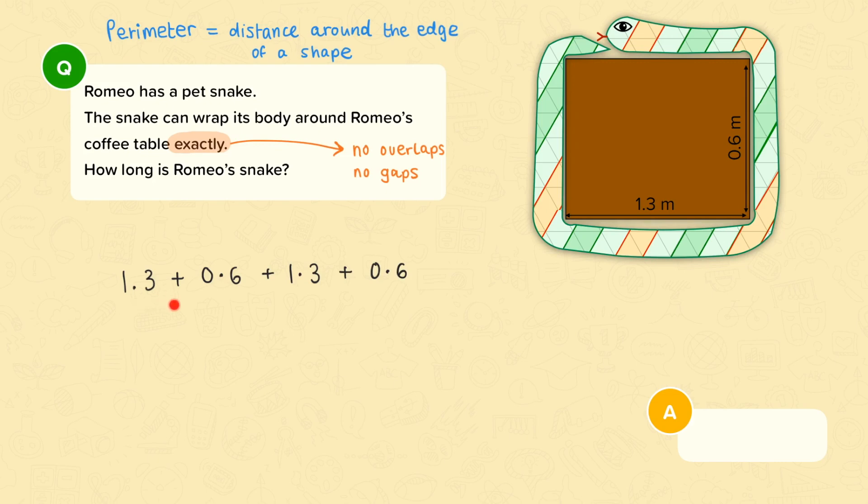So I can do 1.3 plus 0.6 is 1.9 and because I have two lots of 1.9 I can either work out 1.9 plus 1.9 to get 3.8 or I could say it's 1.9 times 2 which is 3.8. So either way my final answer is 3.8 metres.